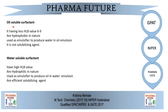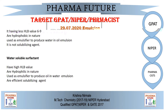Oil-soluble surfactants have a low HLB value, nearly 6 to 9, and are hydrophobic in nature. They are used as emulsifiers to produce water-in-oil emulsion — so the correct answer is Option C. They are not solubilizing agents. In contrast, water-soluble surfactants have a high HLB value, are hydrophilic in nature, produce oil-in-water emulsions, and are efficient solubilizing agents.